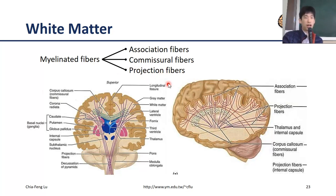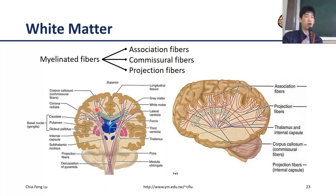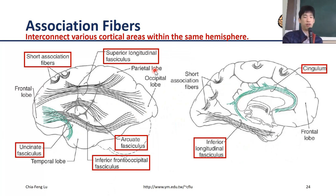The final type is the projection fiber. It connects your brain with the peripheral nervous system — projecting axonal fibers through the brainstem to the spinal cord. This is called the projection fiber.